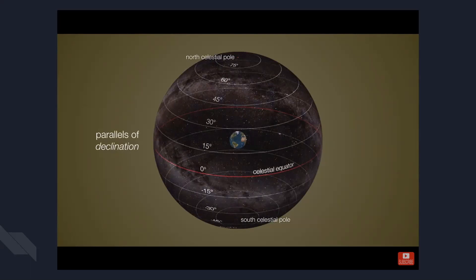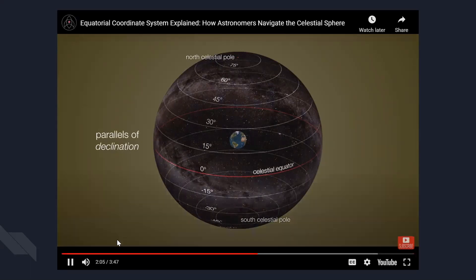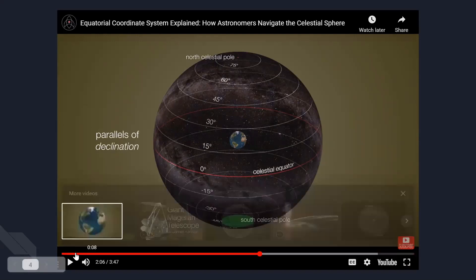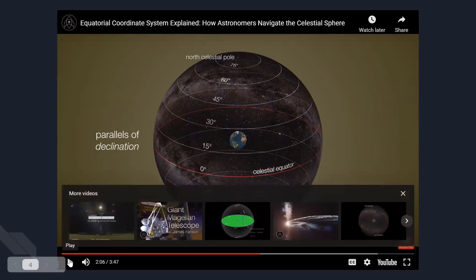So we measure declination as zero degrees from the equator all the way up to positive 90 at the north celestial pole, all the way down to negative 90 at the south celestial pole. Is there any problem in hearing this? Continue.